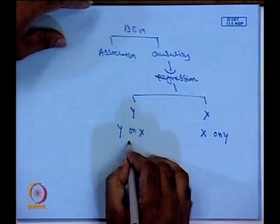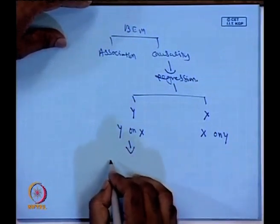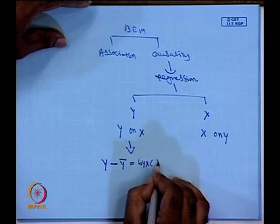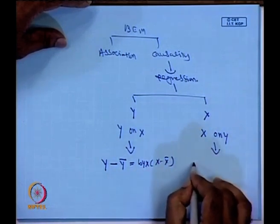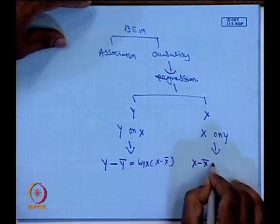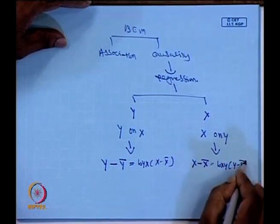If it is y on x, how is the setup? The regression equation for y on x is: y − ȳ = b_yx(x − x̄). In the case of x on y, the regression equation is: x − x̄ = b_xy(y − ȳ).